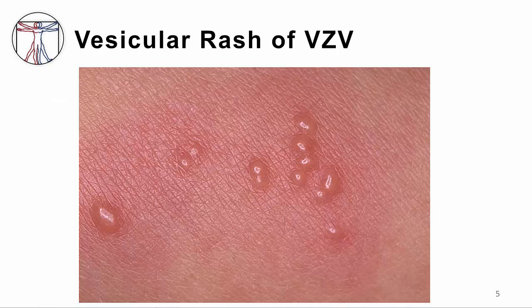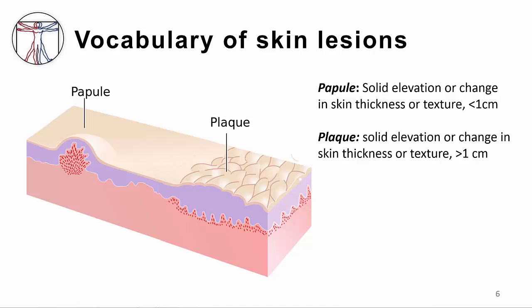When your patient develops a rash, you should think of several different causes before deciding what the most likely etiology is. As outlined previously, varicella is just one cause of a vesicular or blistering rash, but there are other types of problems that can look very similar. I'd like to define some commonly used terms to describe rashes.